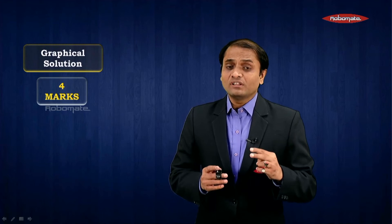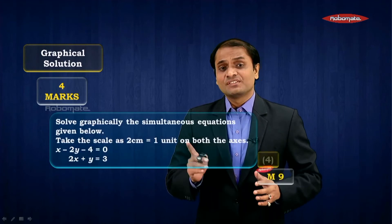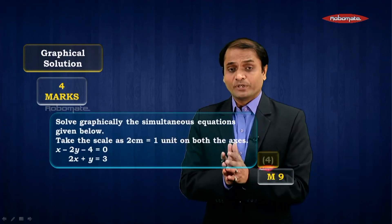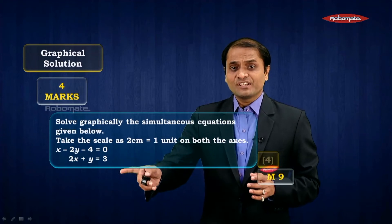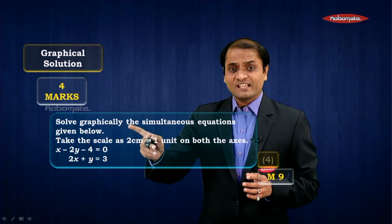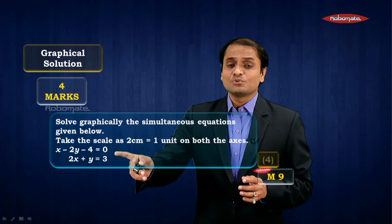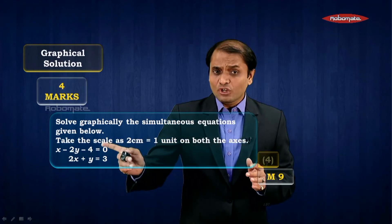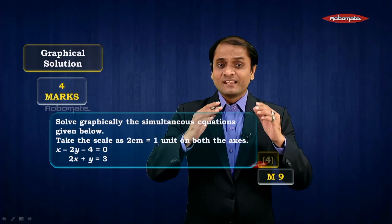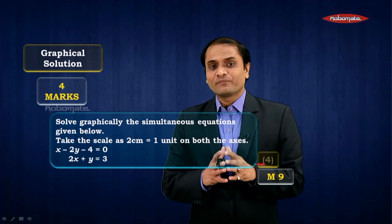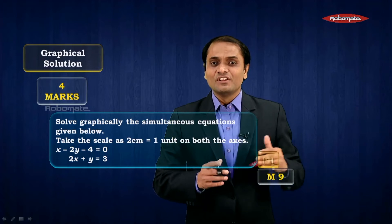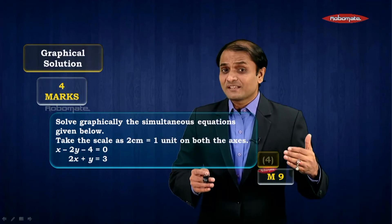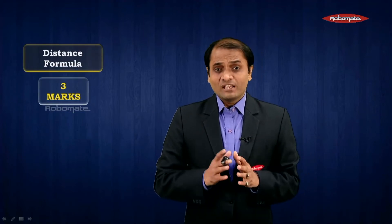I feel they will definitely ask a question from graphical solution where you have to solve two given equations simultaneously on a graph paper. There are two equations and they say solve graphically these two simultaneous equations — it means draw the graphs of these two lines and find the coordinates of the point of intersection. You could get one such sum for four marks.